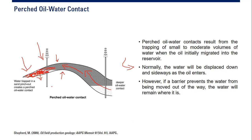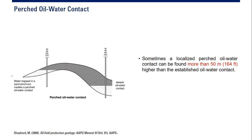The small to moderate volume of water stays in place, creating the perch oil-water contact. It's a very interesting concept. Sometimes a localized perch oil-water contact can be found more than 50 meters — or 164 feet — higher than the established or existing oil-water contact, making it significantly shallower.